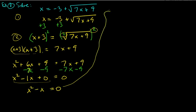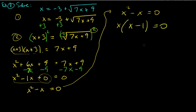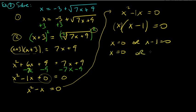Factor out an x: x times (x minus 1) equals zero. Set each factor to zero: x equals 0 or x minus 1 equals 0, giving x equals 1. Two possible answers — now check both.